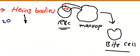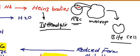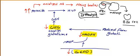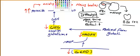Red blood cells with Heinz bodies are abnormal, and the end result will be intravascular hemolysis. You will see a patient with dark-colored urine and hemoglobinuria. The reticulocyte count will be high in this patient because it is a hemolytic process.